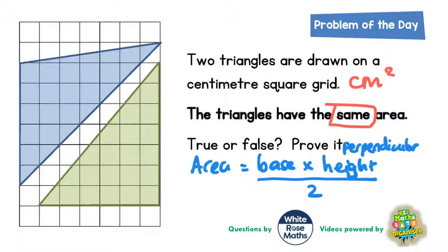Let's find the area of the green triangle first. The base is along the bottom — that's easy enough, we just count the squares: one, two, three, four, five, six. So that's six squares along the bottom.